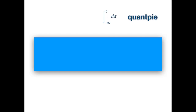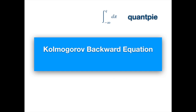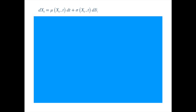Hi, and good to see you again. We are now going to discuss the Kolmogorov Backward Equation. Specifically, we are going to cover its derivation. Previously we derived the forward equation for a general process described by the following SDE, and we know we can get the familiar processes such as the Geometric Brownian and Ornstein-Uhlenbeck processes as special cases of this process by just changing the drift and diffusion coefficients.